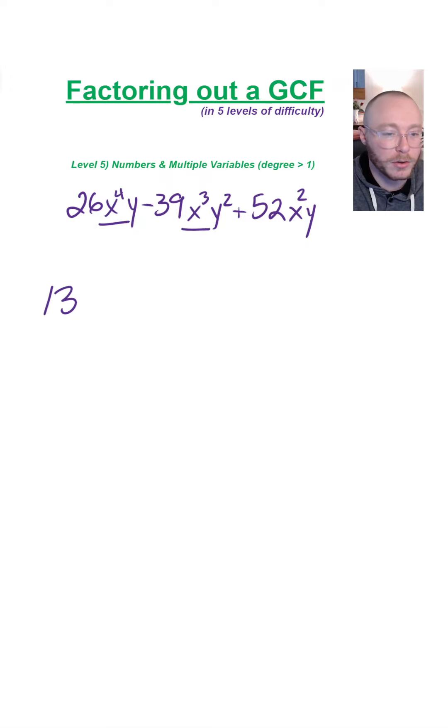Then we've got x to the fourth, x to the third, x to the second. Make sure you factor out the one with the lowest power. That would be x squared.